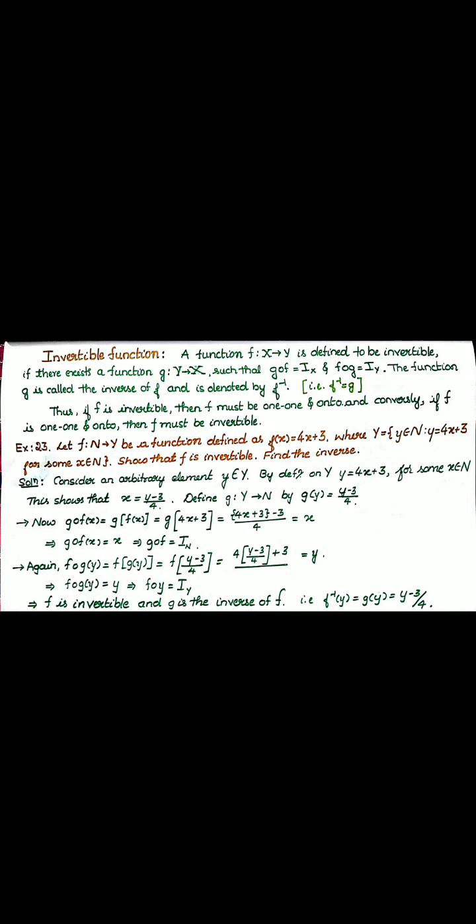To show that a function is invertible, g composition f must be an identity function and f composition g must also be an identity function. That is, you need to prove that g composition f of x equals x, and f composition g of y equals y. Only then is your function an invertible function.